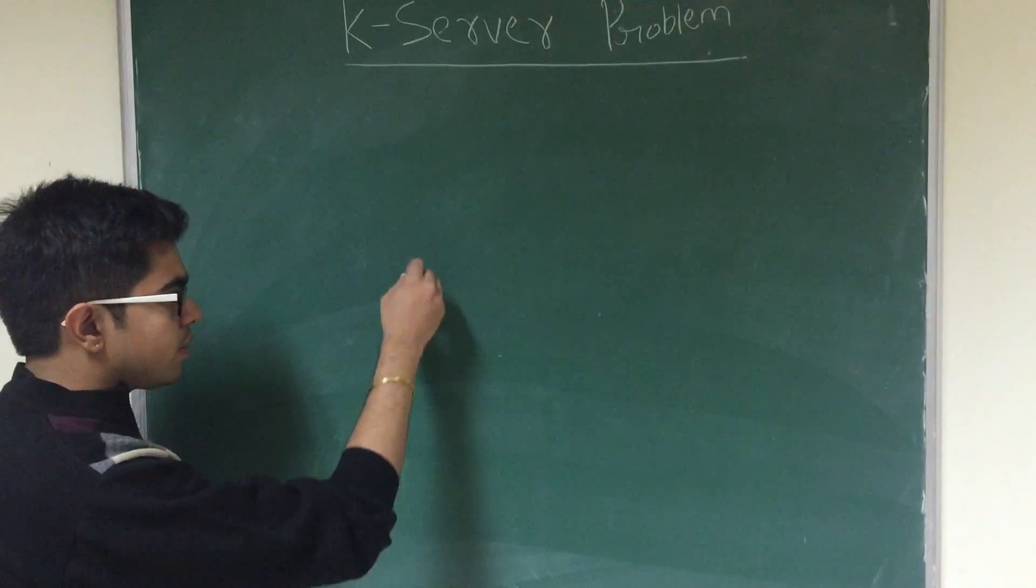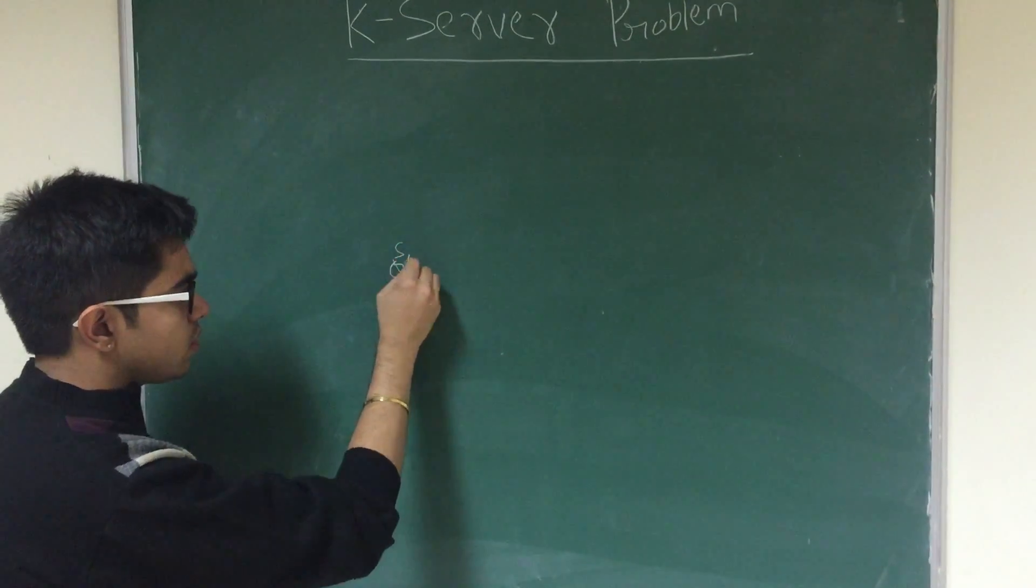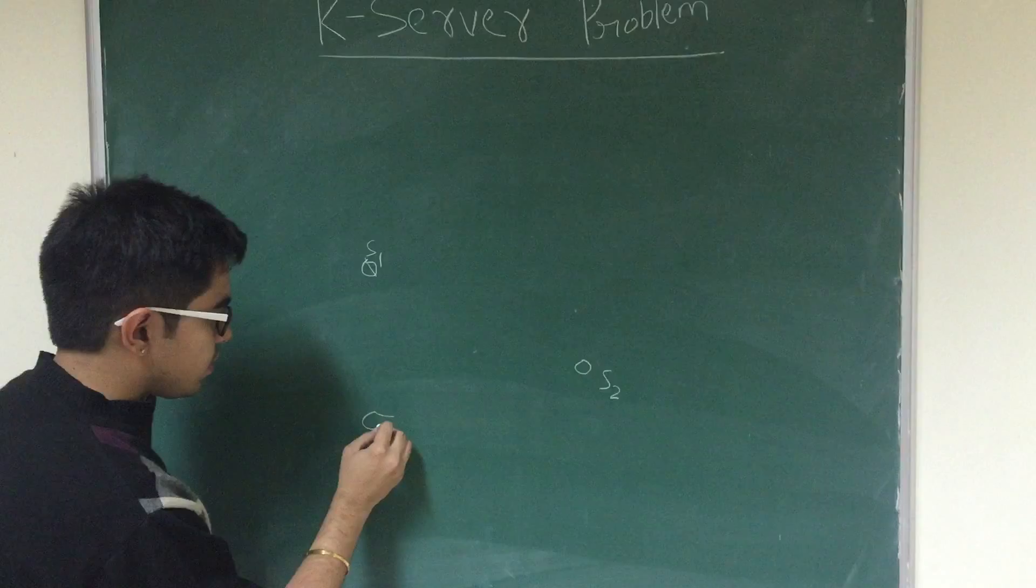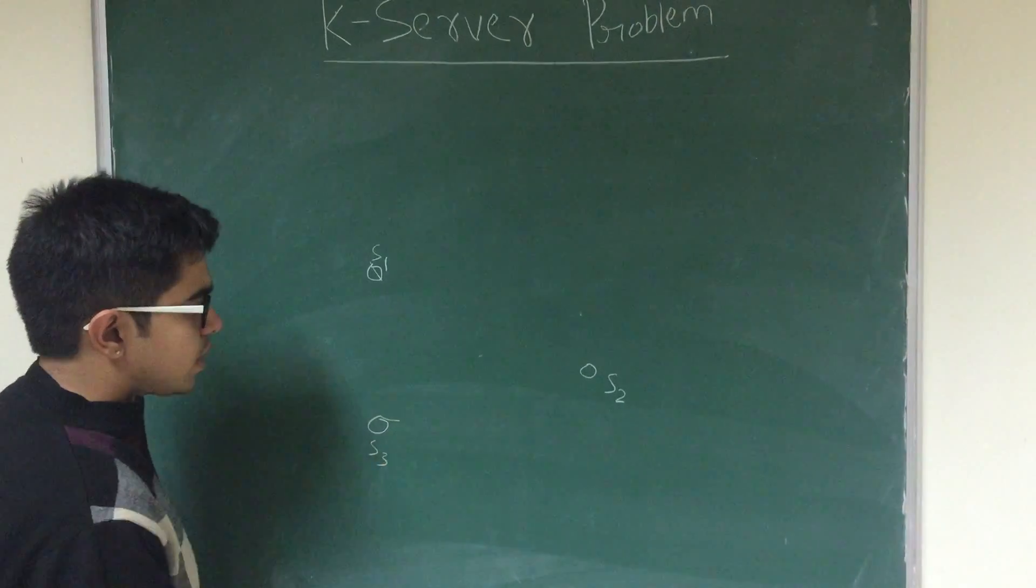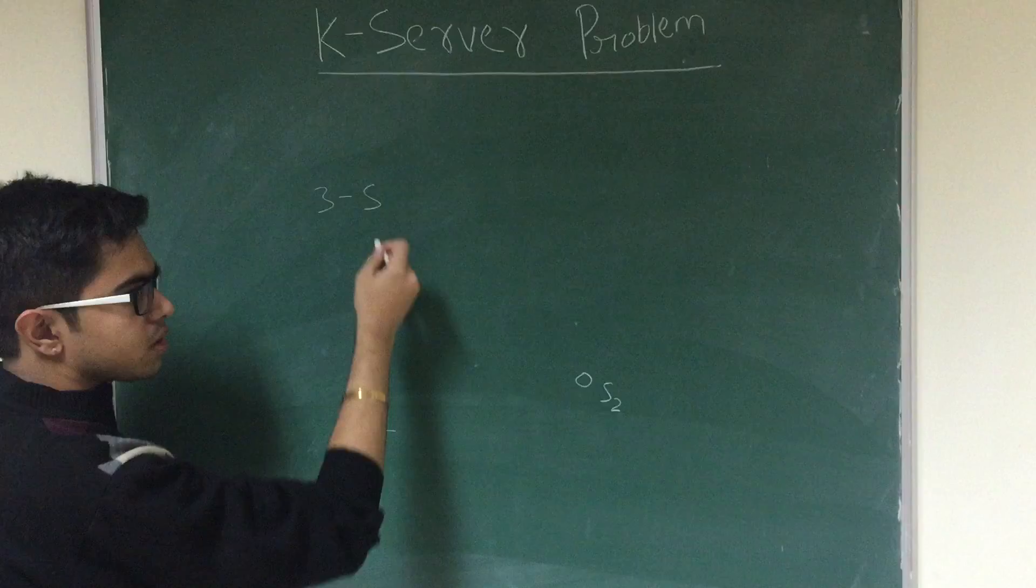Let's try to understand in a general sense what the problem is. Let's say we have k number of servers. Let's say this is my server 1, S1. I have somewhere in my space server 2 and let's say I have server 3. So right now I have a 3-server problem, just for the sake of this example.